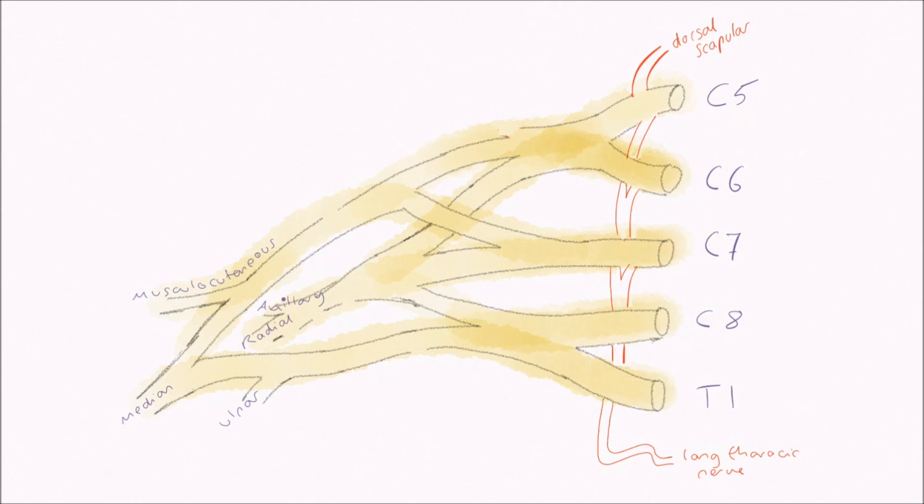Moving on to the trunks, the branch to know is the suprascapular nerve. This branches from the superior trunk and runs posteriorly to innervate supraspinatus, which abducts the arm for the first 15 degrees of motion, and infraspinatus, which is responsible for lateral rotation of the arm.